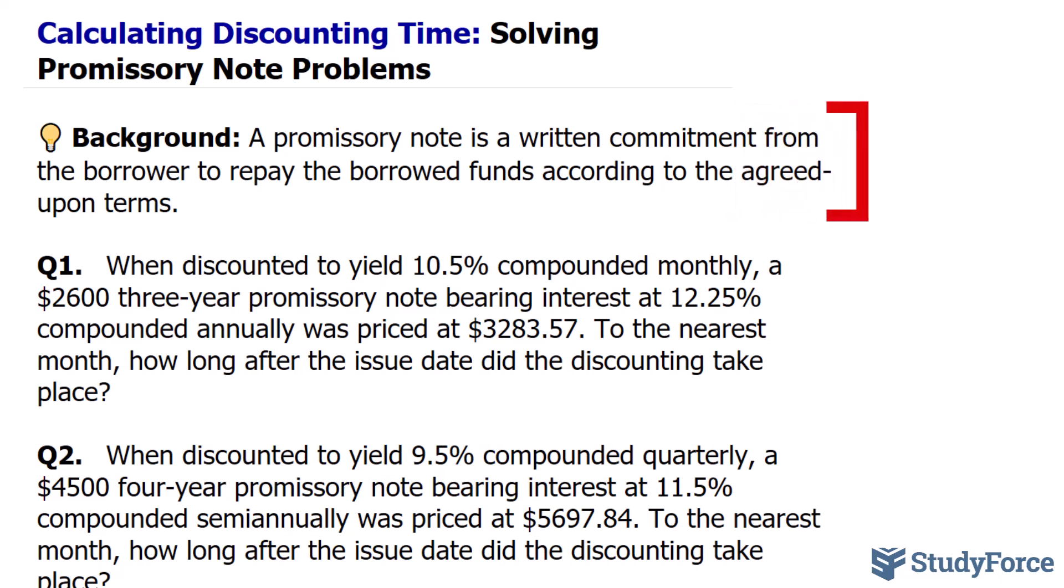A promissory note is a written commitment from the borrower to repay the borrowed funds according to the agreed-upon terms. In this video, we'll look at how to solve promissory note problems where we have to find the discounting time.